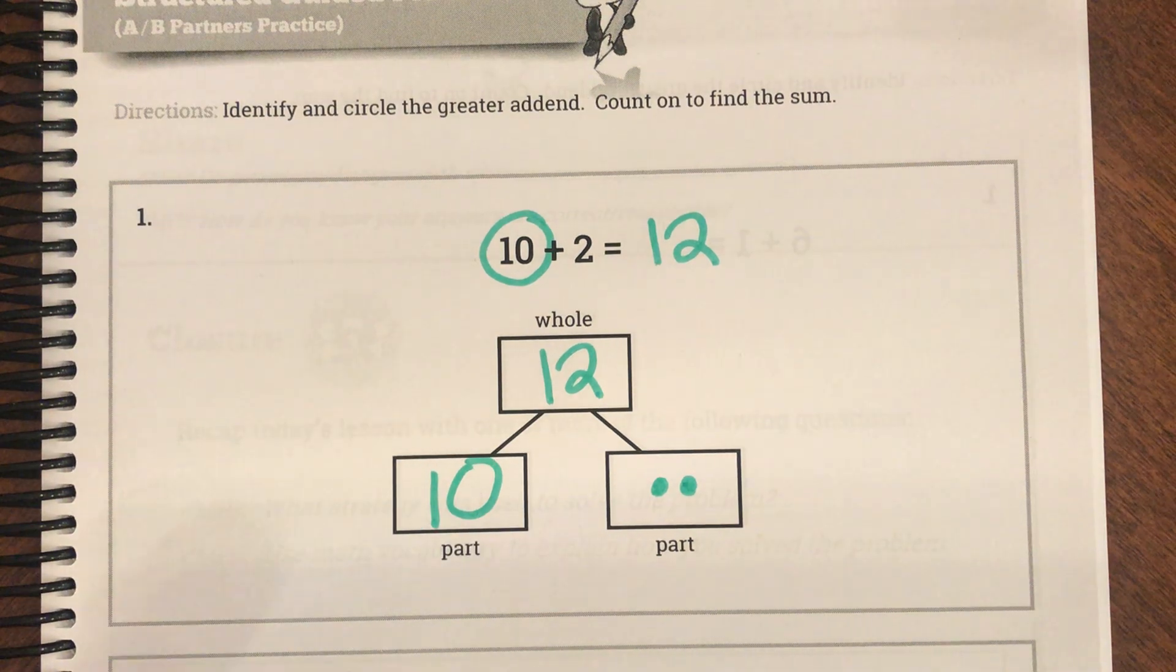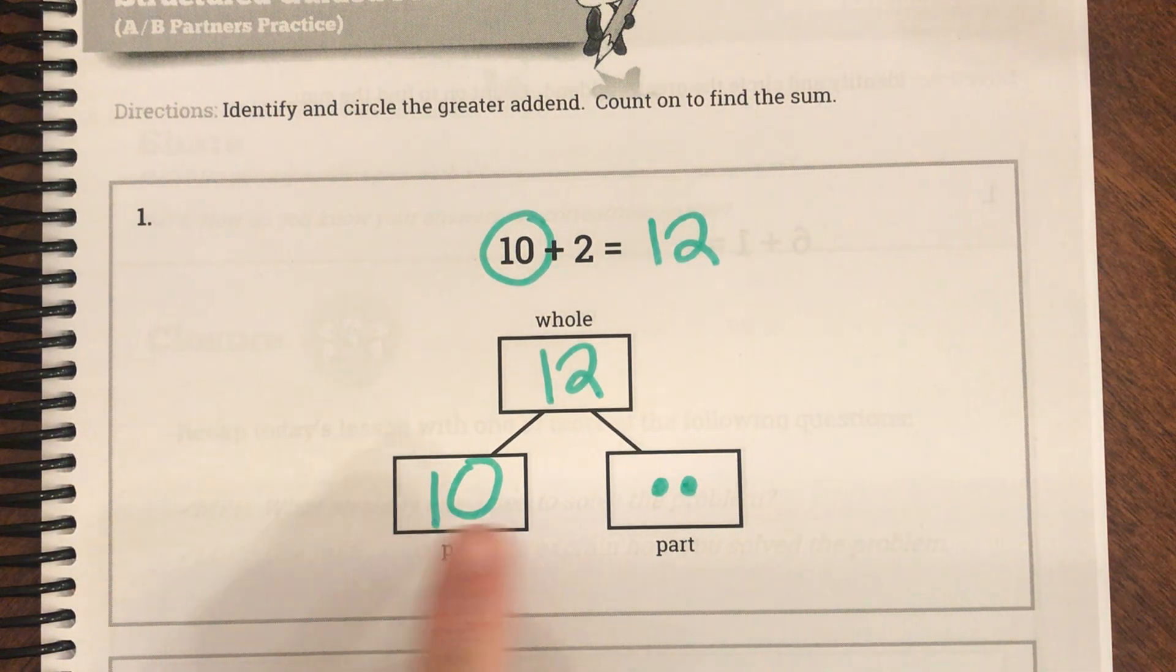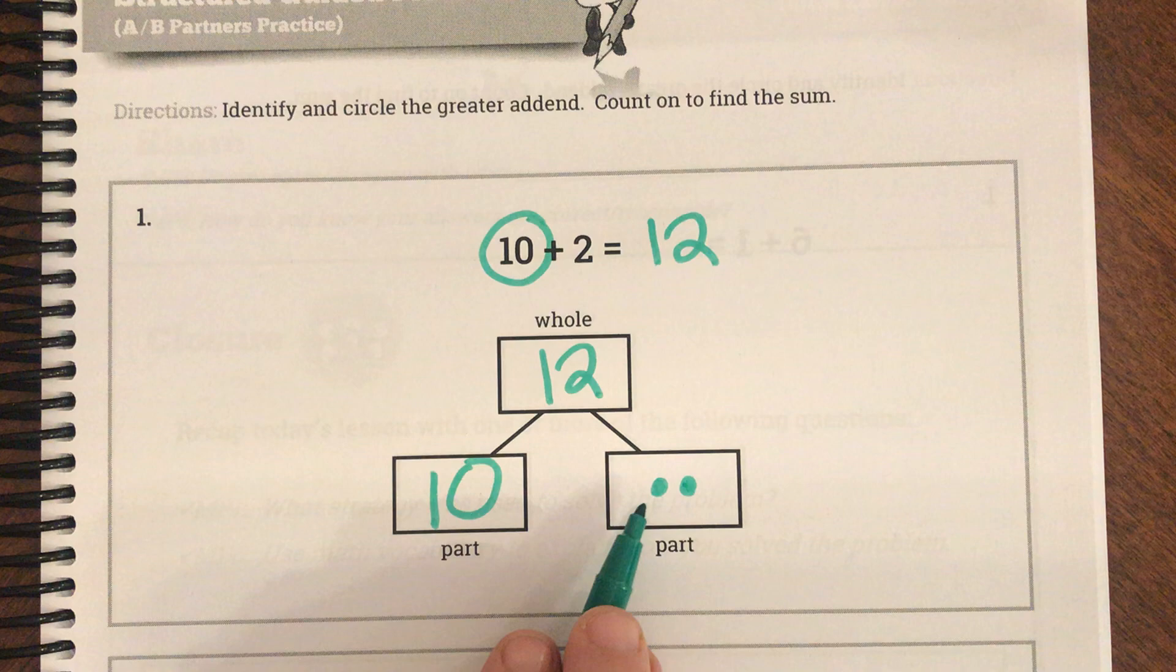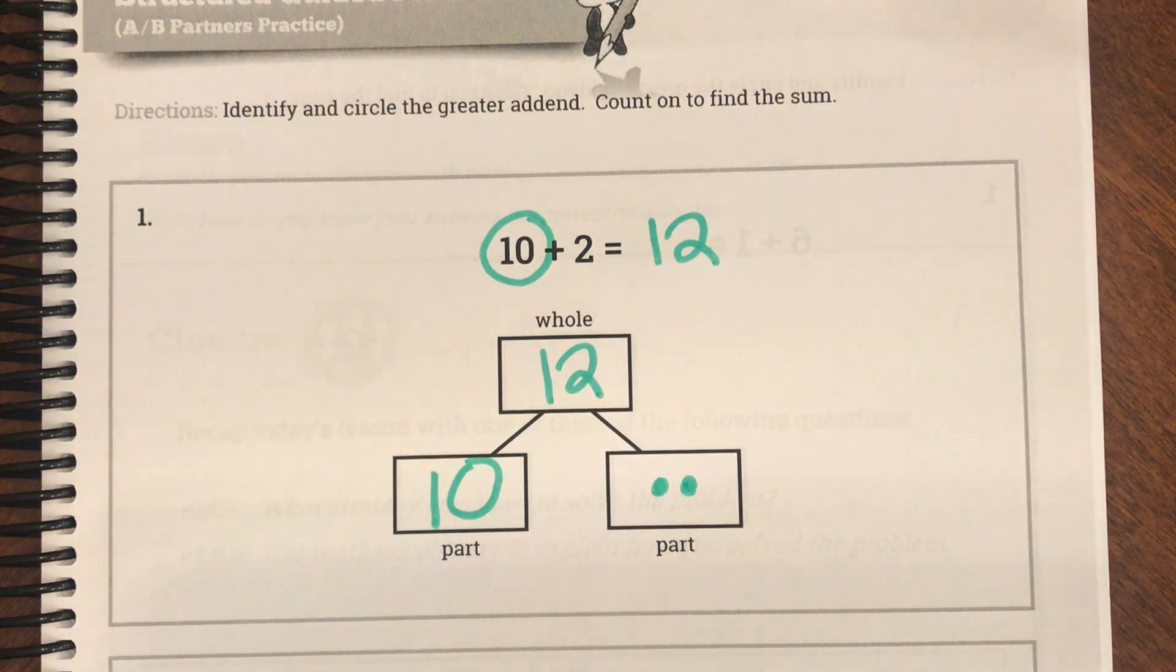So that's what counting on is. We start with the largest addend and then we keep counting. So 10, 11, 12. Let's look at our next one.